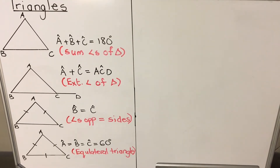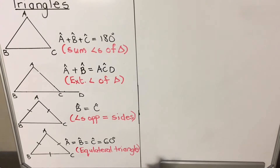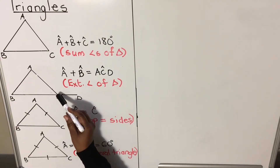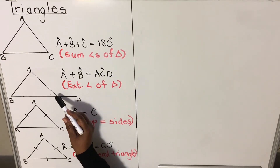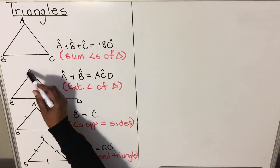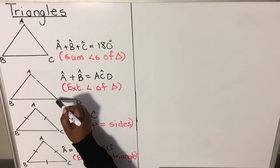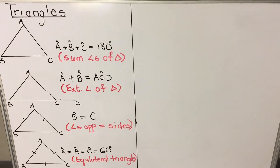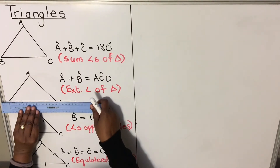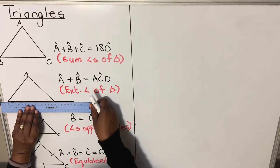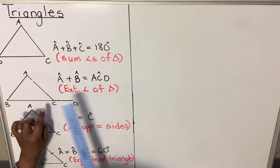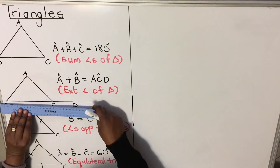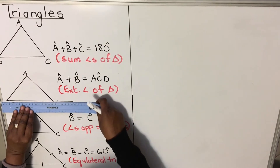The next property of triangles is the exterior angle of a triangle. When we have triangle ABC, we have an angle that is outside. The exterior angle must be an extension of a line — it must not be a line that goes across; it must be an extension of one line like this.